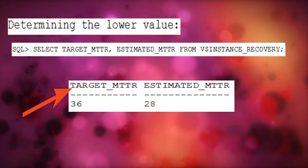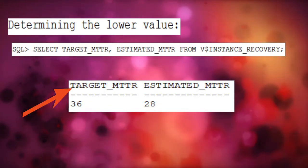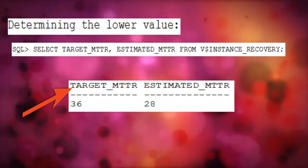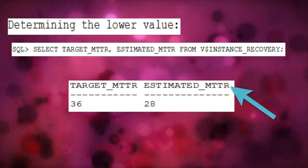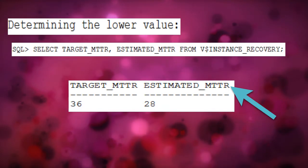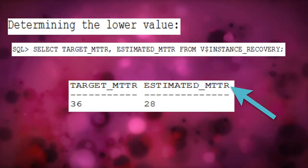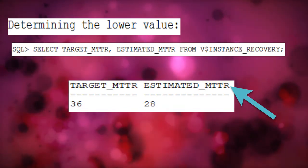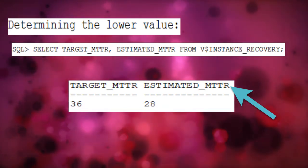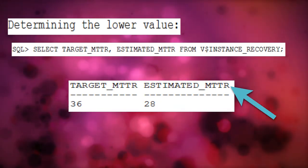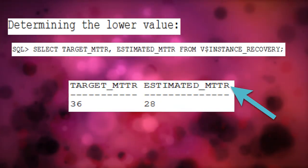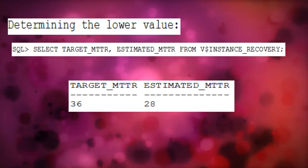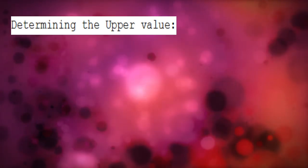The target MTTR figure is what the Oracle database can actually achieve in terms of instance recovery timings, and the estimated MTTR figure has been calculated by the database based on the dirty buffers currently in the cache, which are very few as the database has just started. This value keeps on changing depending upon the workload on the database — more dirty buffers in cache would lead to a higher value.